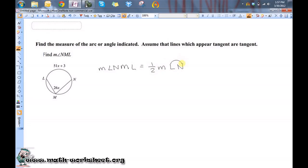So let's just substitute the algebraic expressions in that represent these individual measures. So this measure is represented by the expression 26X. And that's one half, and this expression 51X plus 3 represents the measure of arc LN.